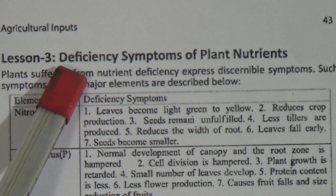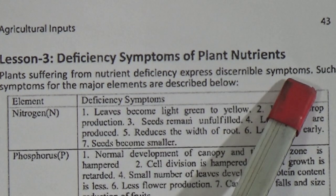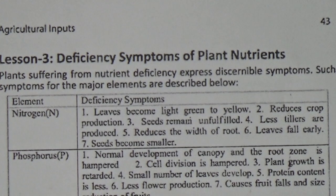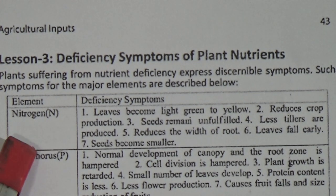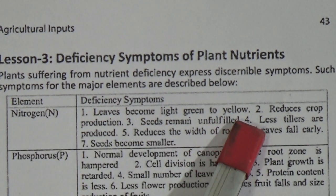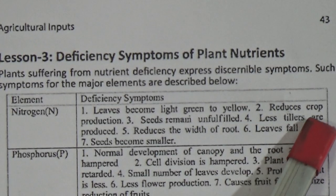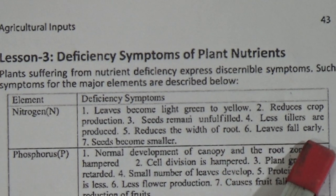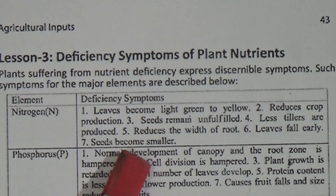Let's see number 3: Deficiency symptoms of plant nutrients. Plants suffering from nutrient deficiency express discernible symptoms. Such symptoms for the major elements are described below. Element 1 is Nitrogen. Deficiency symptoms: 1. Leaves become light green to yellow. 2. Reduces crop production. 3. Seeds remain unfulfilled. 4. Less tillers are produced. 5. Reduces the growth of roots. 6. Leaves fall early. 7. Seeds become smaller.